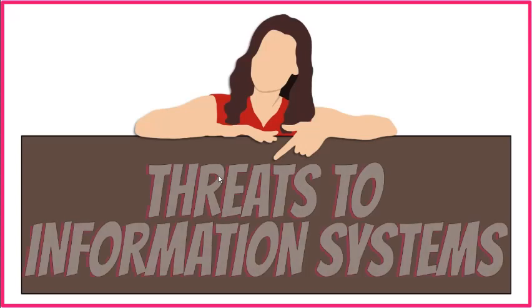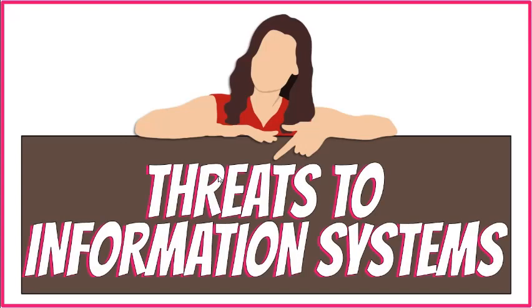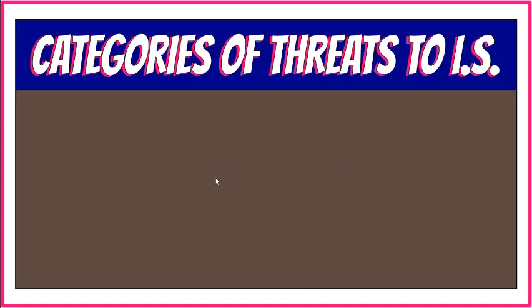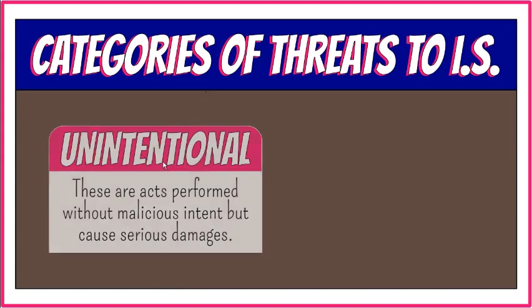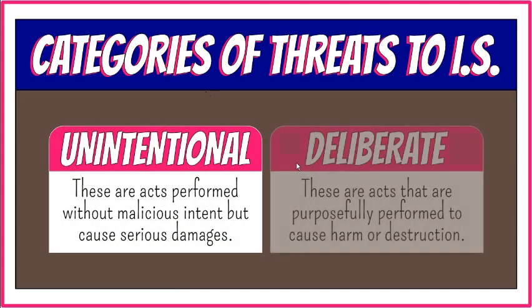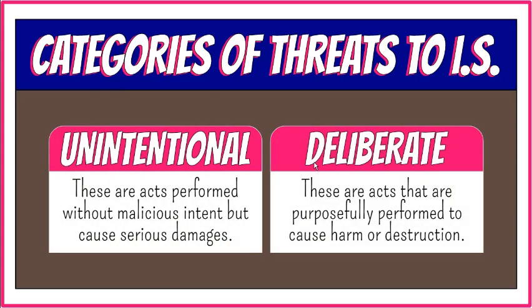Information systems are vulnerable to various dangers which may result in an organization's financial losses, or even destruction of the entire information system. There are two major categories of these threats, namely unintentional and deliberate threats.